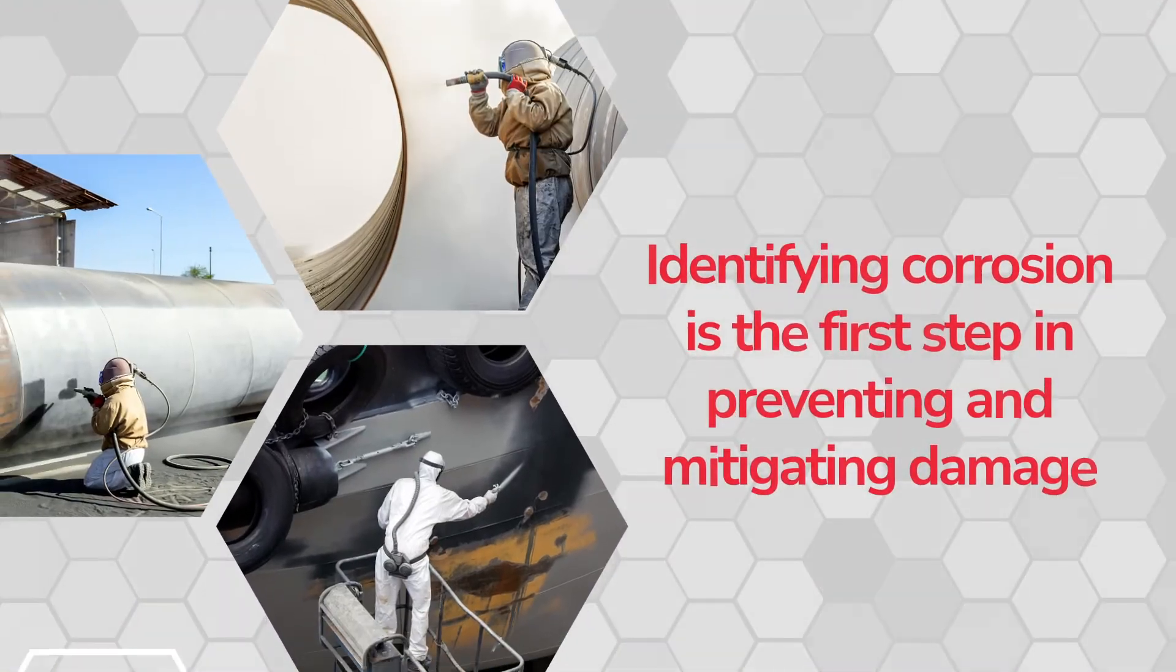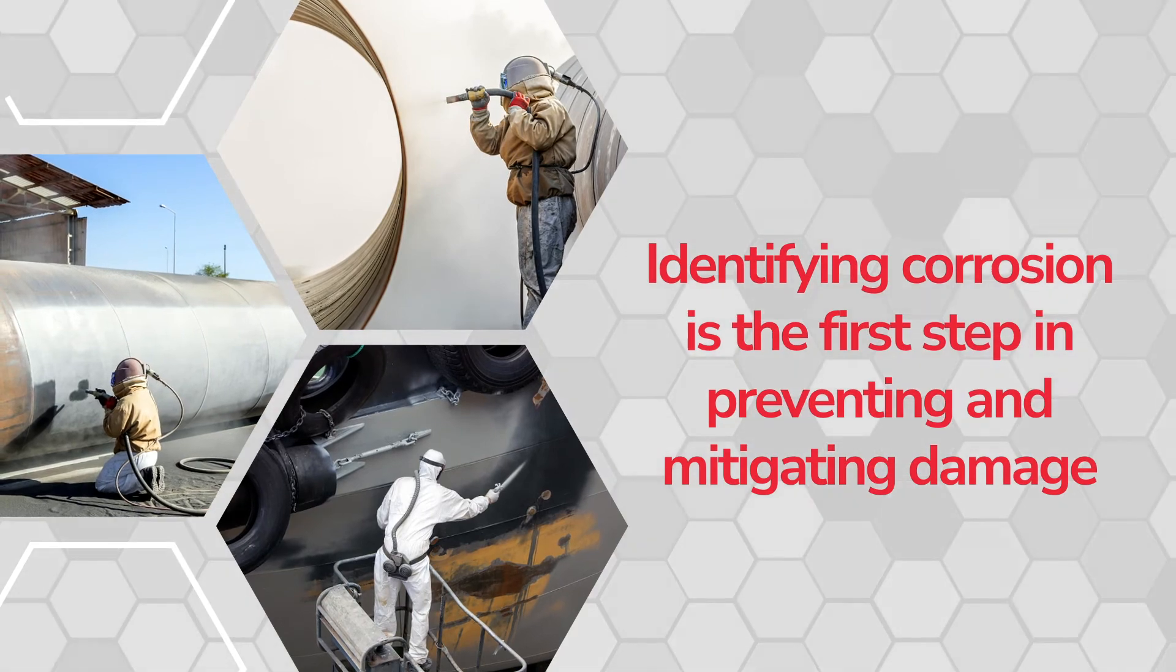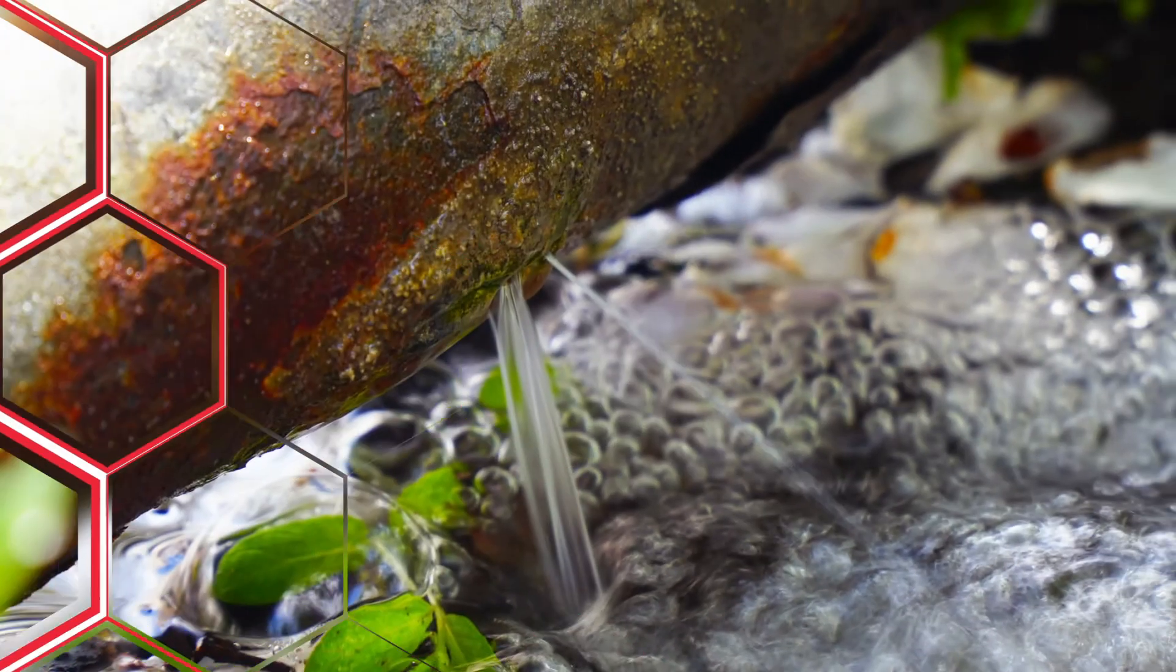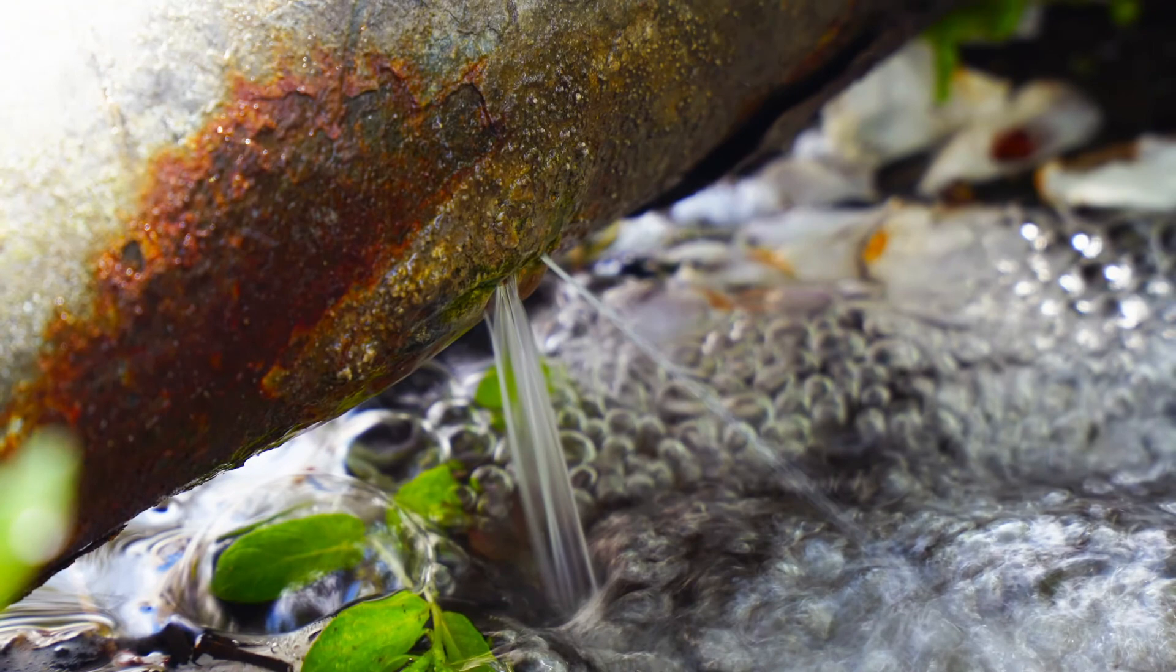Identifying corrosion is the first step in preventing and mitigating damage. In the next videos, learn more about the forms of corrosion and how you can help control the process.